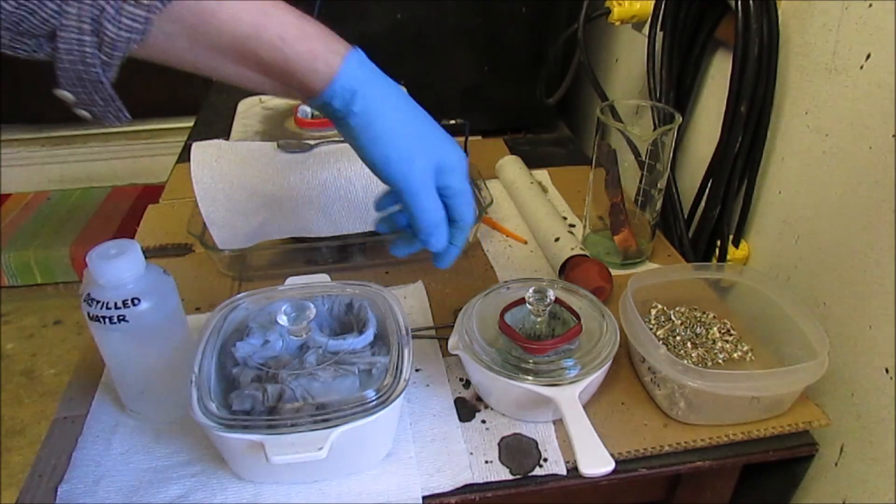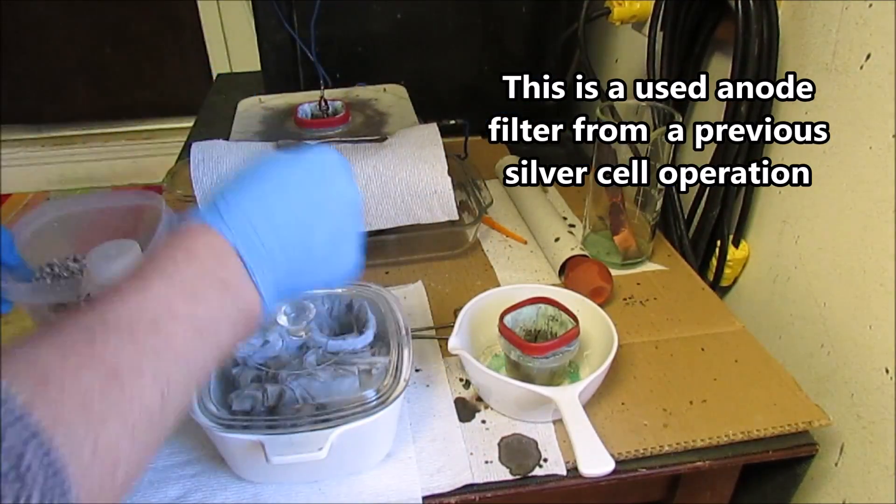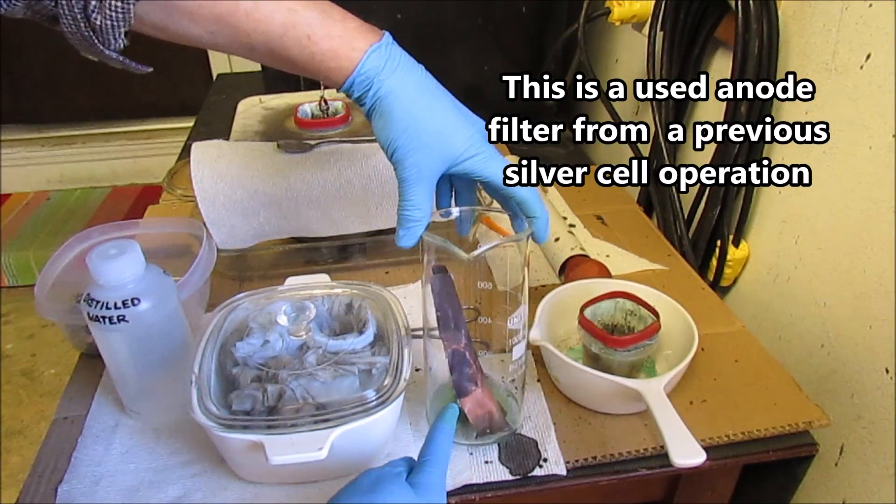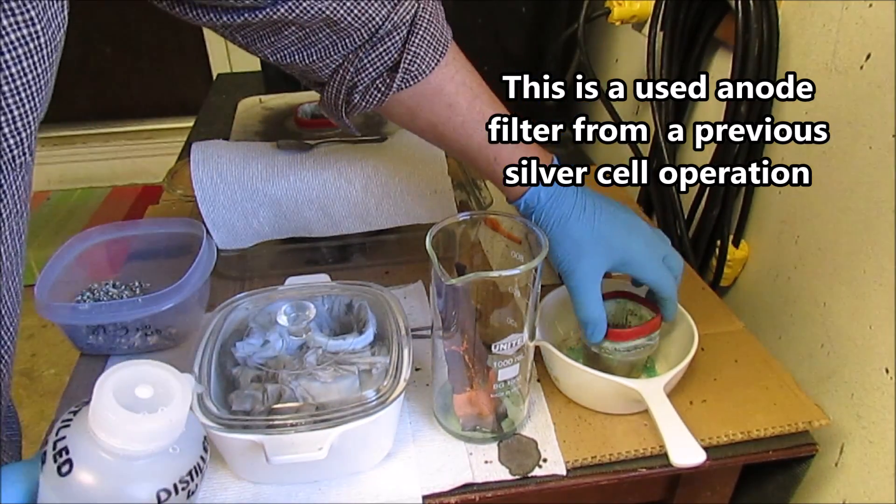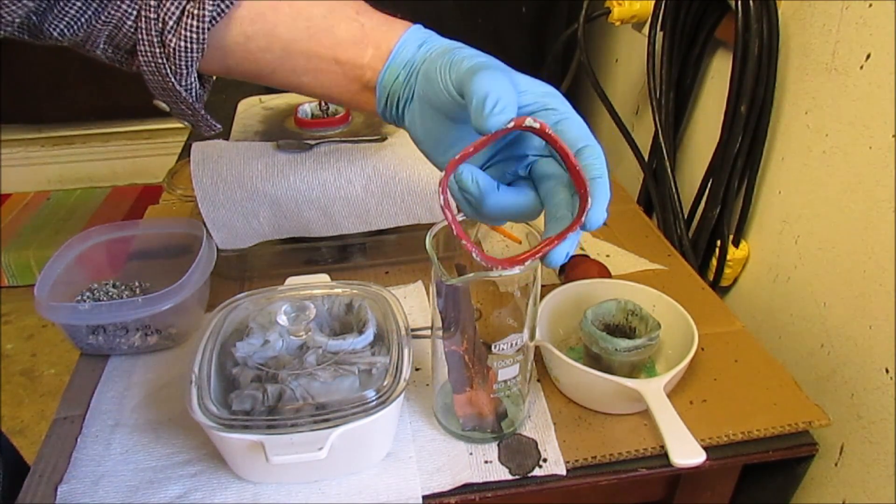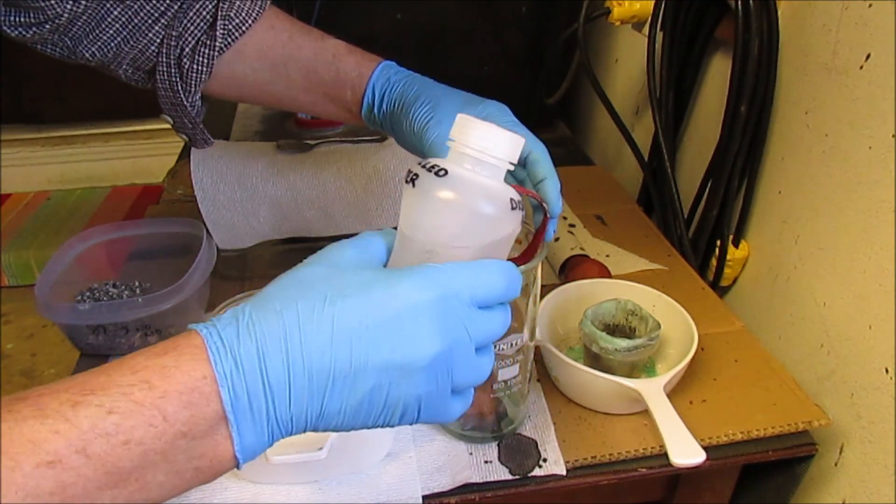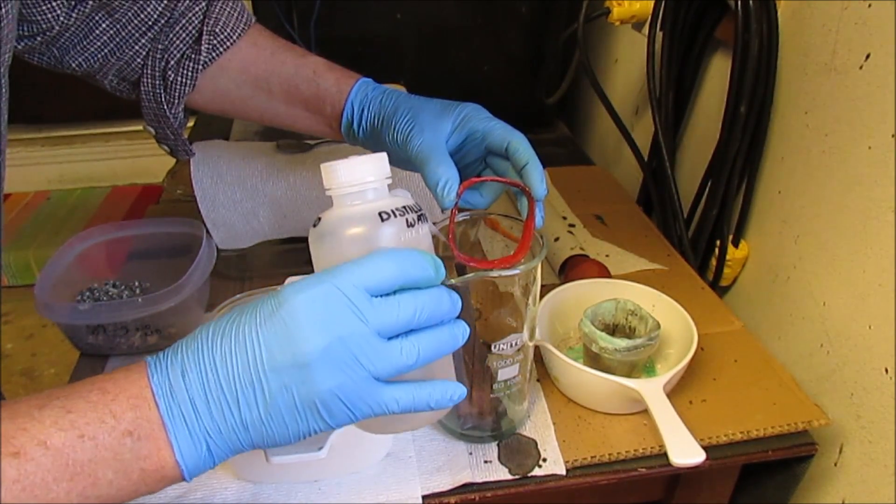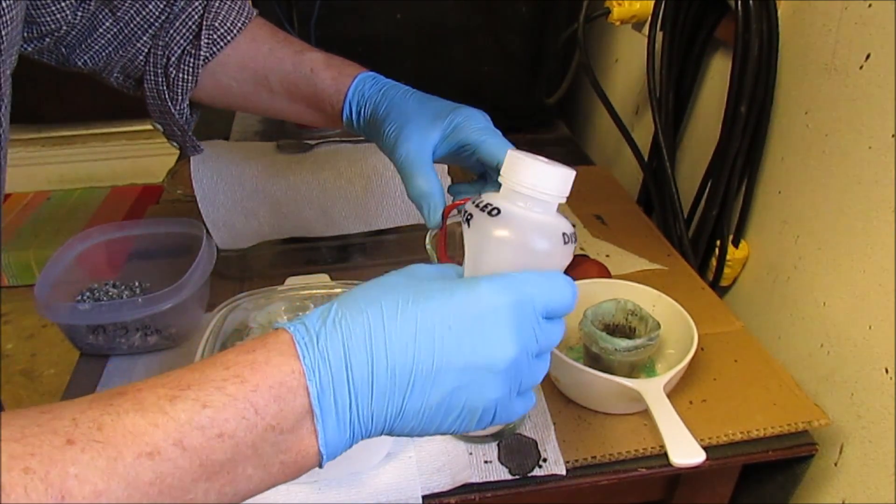Alright first thing I need to do is get the anode basket out of here. I've got a beaker with a piece of copper in it and I'm going to reuse this anode basket but you can see there's some silver nitrate crystals forming on it so I want to rinse that down into my beaker here that's got the copper in it. That'll cement out the copper out of the solution and I'll be able to recover that.